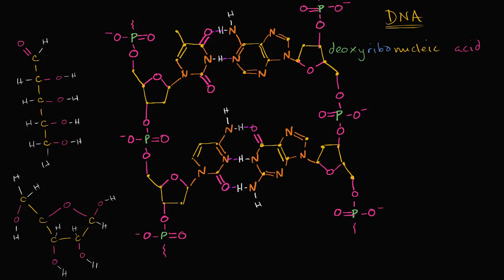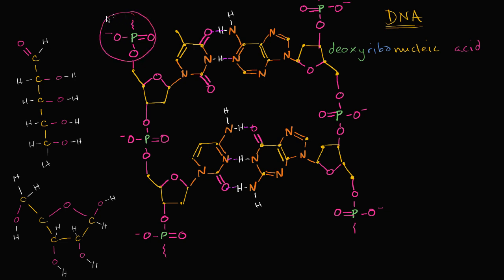In the video on the molecular structure of DNA, we saw that DNA is typically made up of two strands where the backbone of each strand is made up of phosphate alternating with a sugar. You have a phosphate group, and then you have a sugar, and then a phosphate group, and then a sugar.